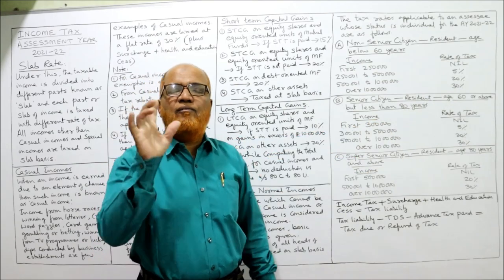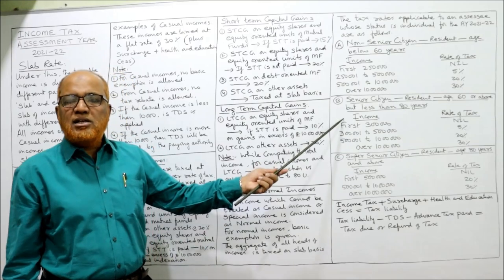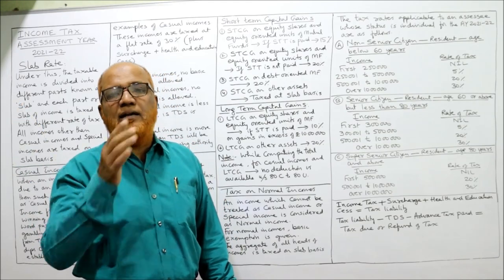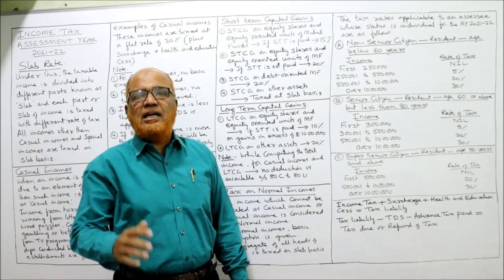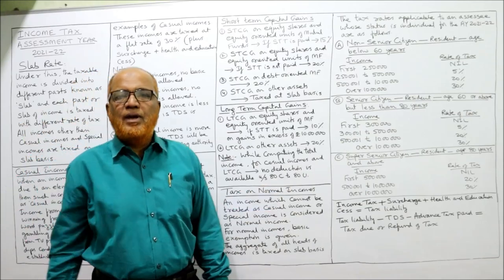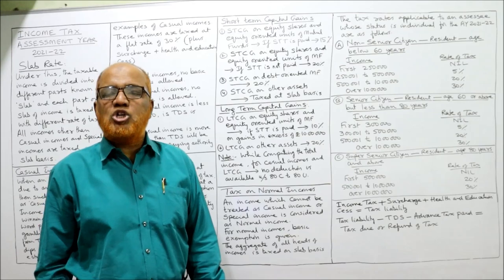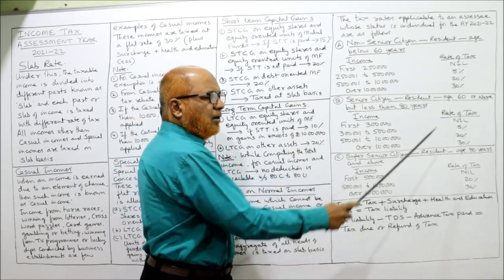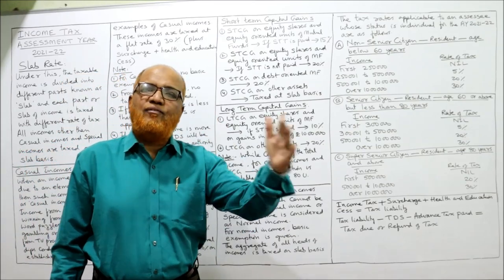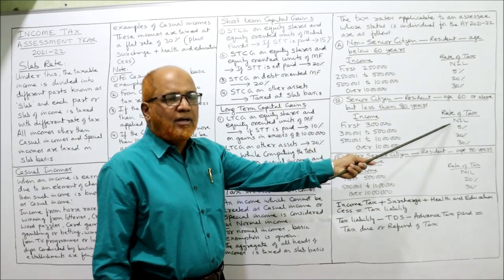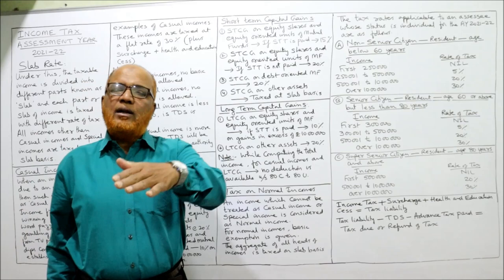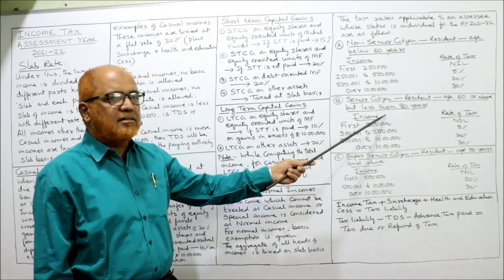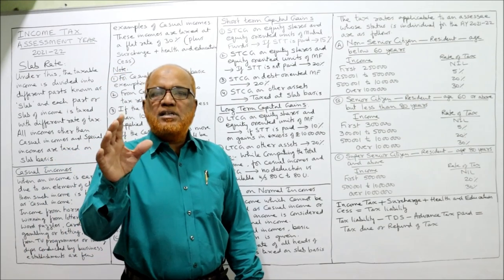Second category — senior citizen: a person who is 60 years or above but below 80 years. The slab system has four slabs: first, up to ₹3 lakh — nil (basic exemption for senior citizen is ₹3 lakh, compared to ₹2,50,000 for non-senior — that is the only difference). Second slab: ₹3,00,001 to ₹5 lakh — 5%. Third slab: ₹5,00,001 to ₹10 lakh — 20%. Last slab: over ₹10 lakh — 30%.